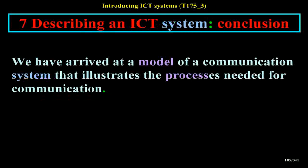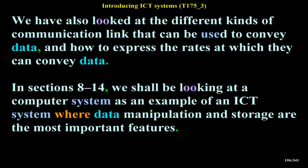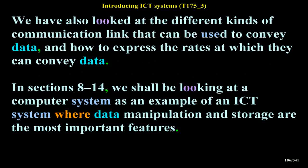We have arrived at a model of a communication system that illustrates the processes needed for communication. We have also looked at the different kinds of communication link that can be used to convey data, and how to express the rates at which they can convey data. In sections 8–14, we shall be looking at a computer system as an example of an ICT system where data manipulation and storage are the most important features.